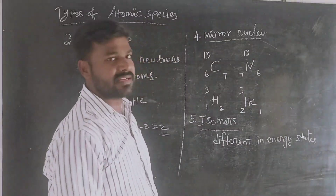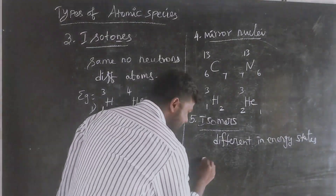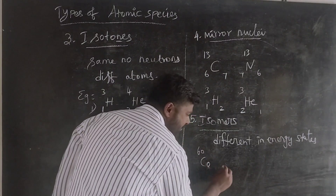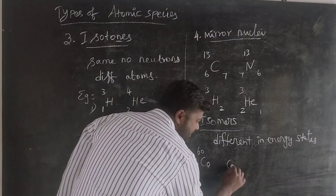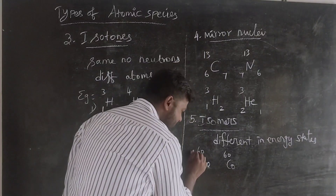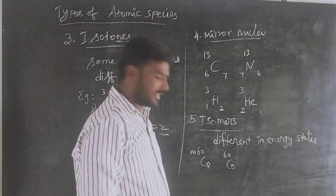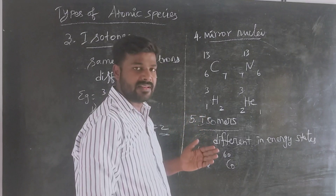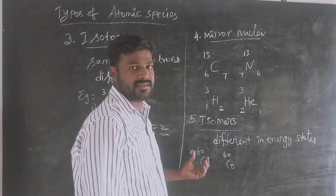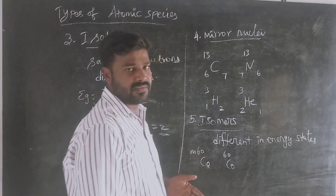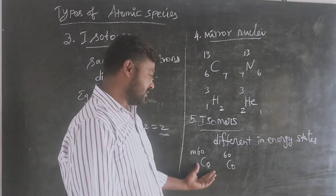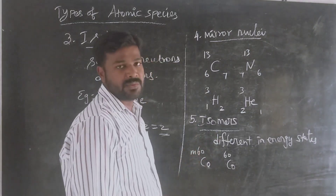One nucleus is at a high energy level. For example, cobalt-60 and cobalt-60M: the M denotes a metastable state, which is a high energy level. The metastable state emits gamma rays. The charge and mass are the same, so the two are isomers.